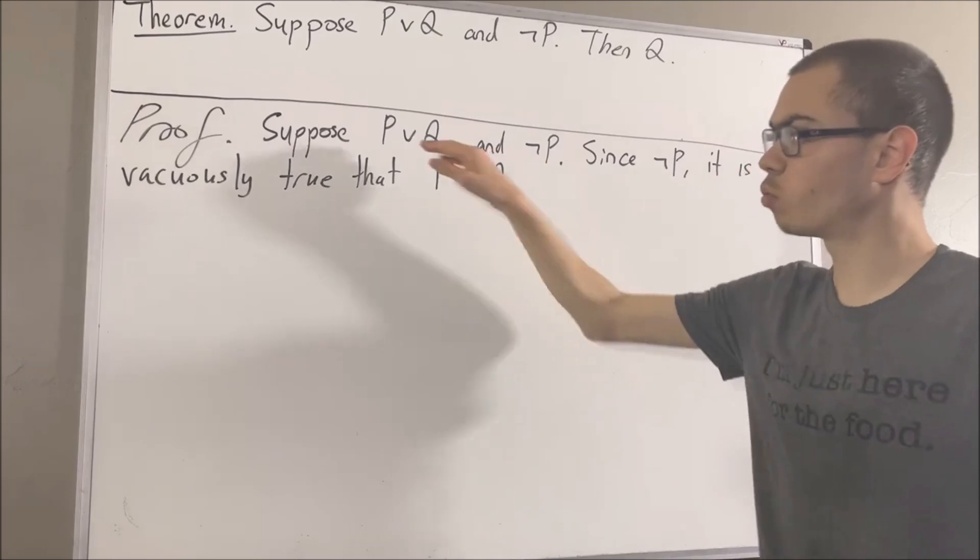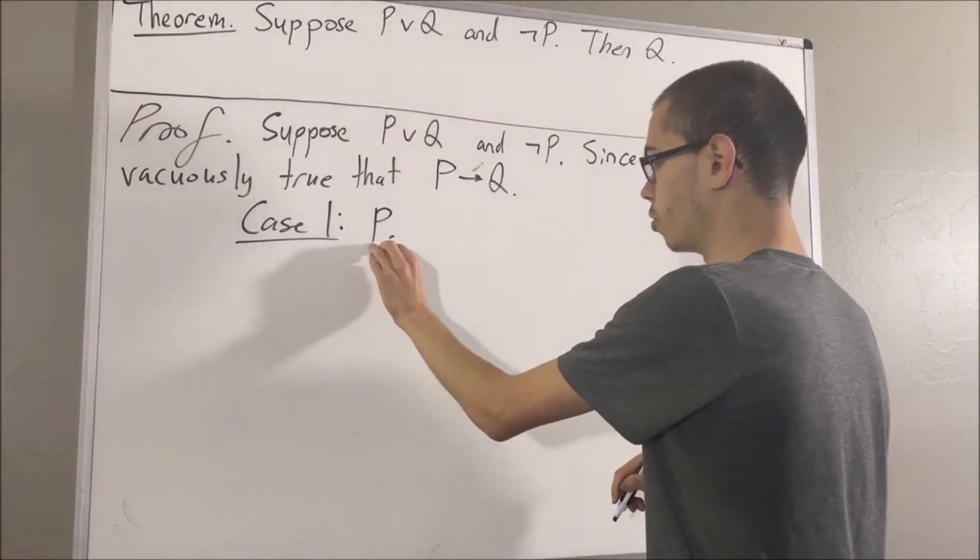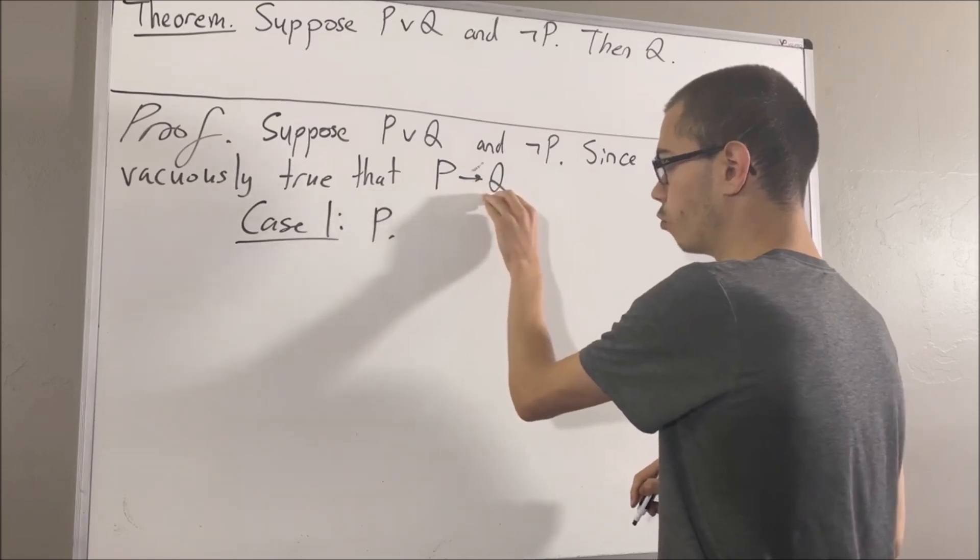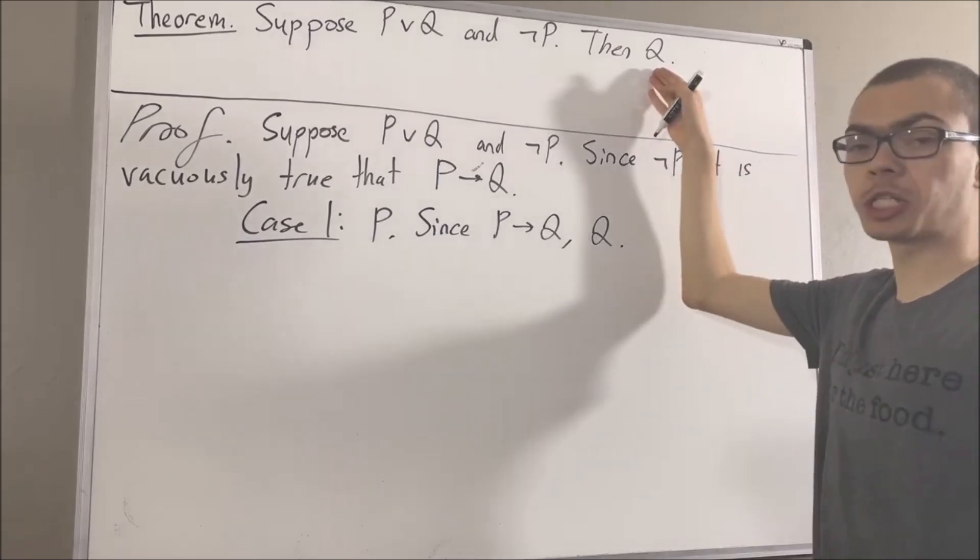Let's start with case one, where P is true. In the case where P is true, since P implies Q, we must have that Q is true. And that's exactly what we wanted to show.